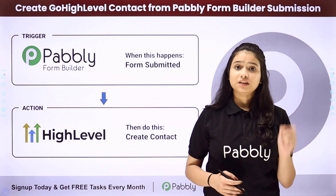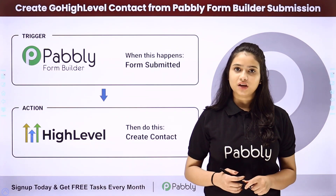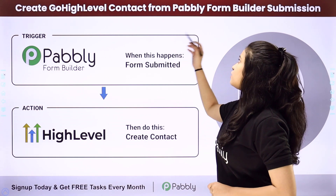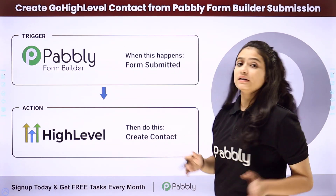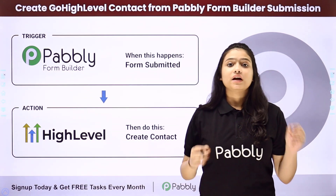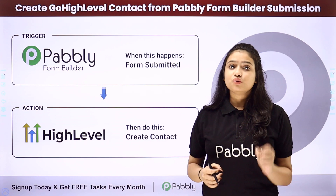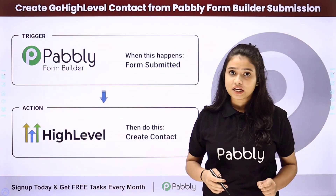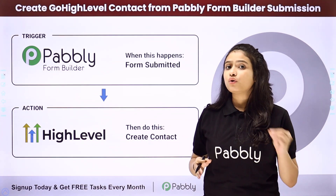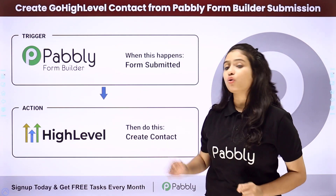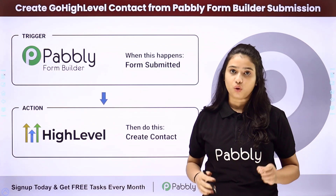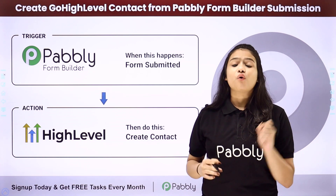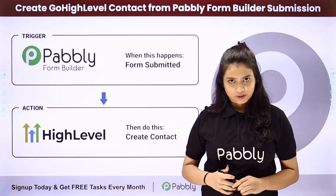Hello everyone! In today's video we are going to learn how to create a Go High Level contact from a Pabbly Form Builder submission. Whenever a new form is submitted in our Pabbly Form Builder application, automatically a new contact should be created in our Go High Level account with those same details, and we want this process to be fully automated.